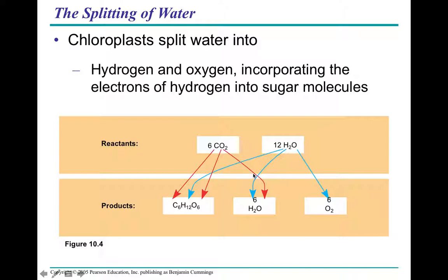How those things get reordered is really important because it happens in different parts of the photosynthetic process. We can track where our carbons go from CO₂, and we can track where the oxygens go. The water molecule is split, and the oxygen released into the atmosphere after photosynthesis actually comes from H₂O, not from the carbon dioxide molecule. The hydrogens are split into our two other products.